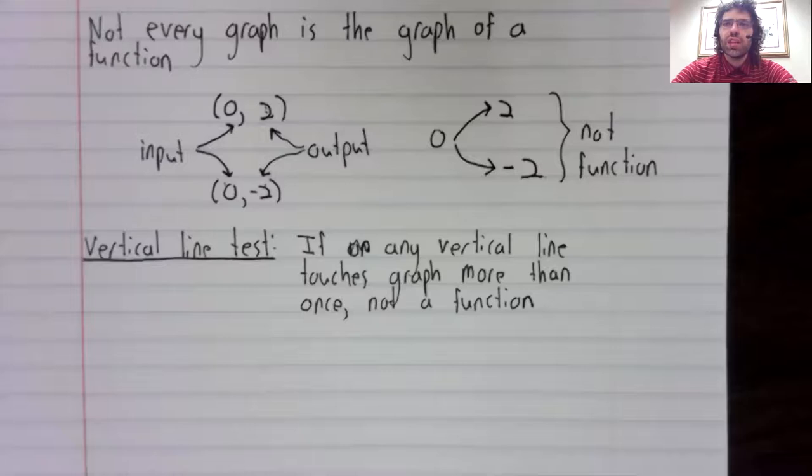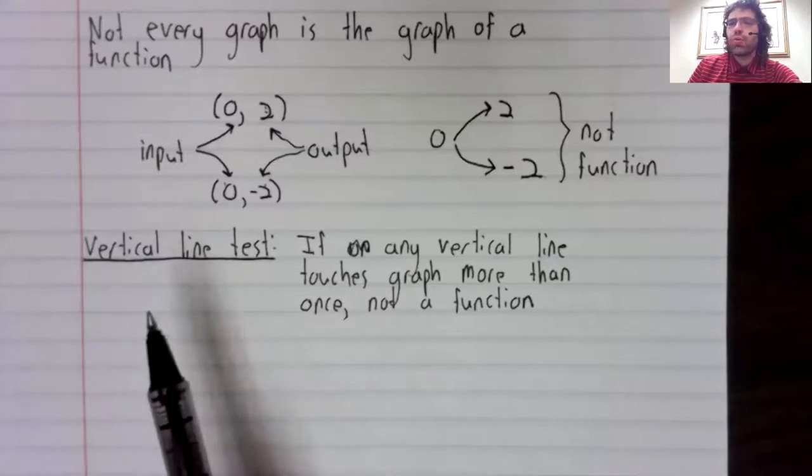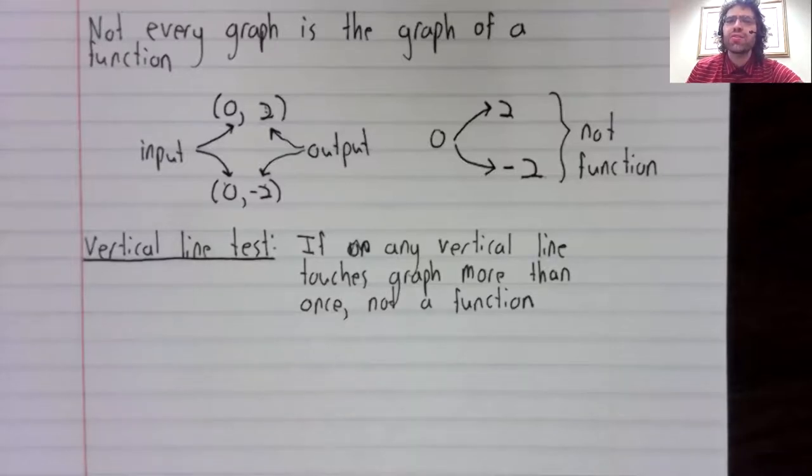That's an example of the vertical line test. If any vertical line you draw touches the graph more than once, then it is not the graph of a function.